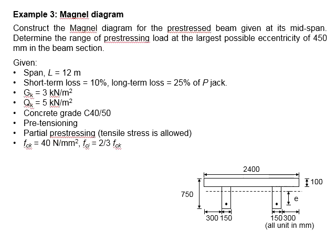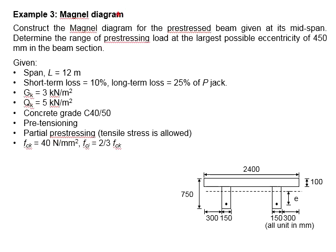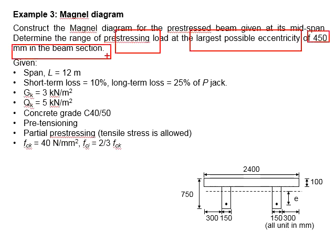Let us try an example on the Magnel Diagram. The question asks us to construct the Magnel Diagram for the prestressed beam given at its mid-span. Determine the range of prestressing load at the largest possible eccentricity of 450 mm in the beam section.